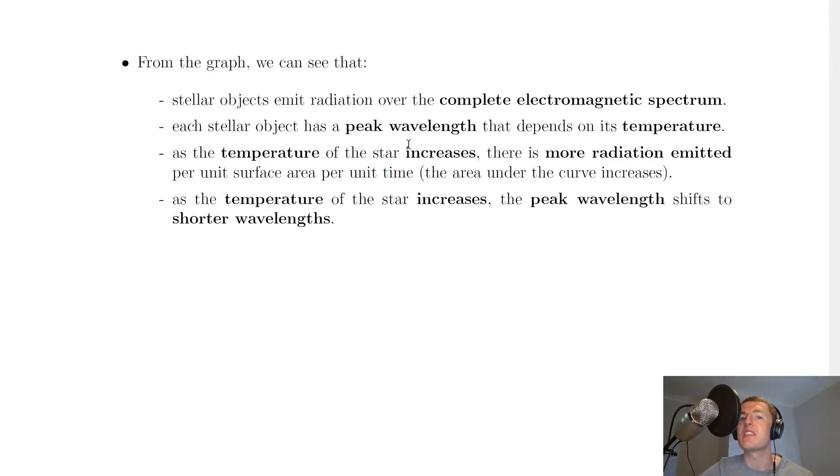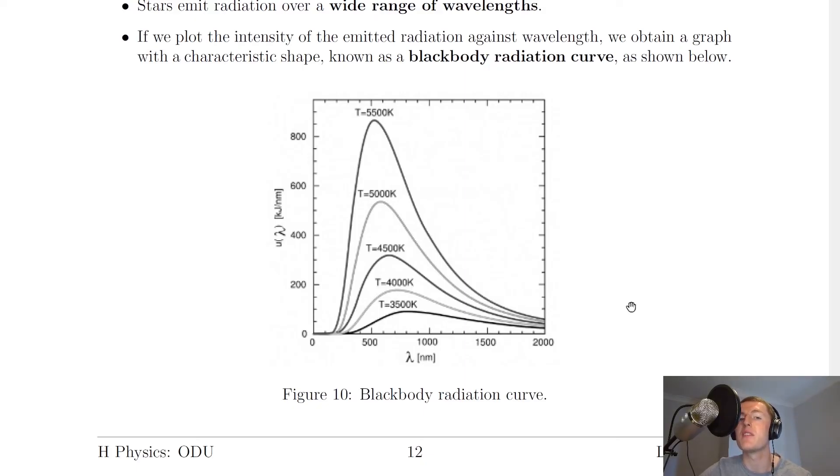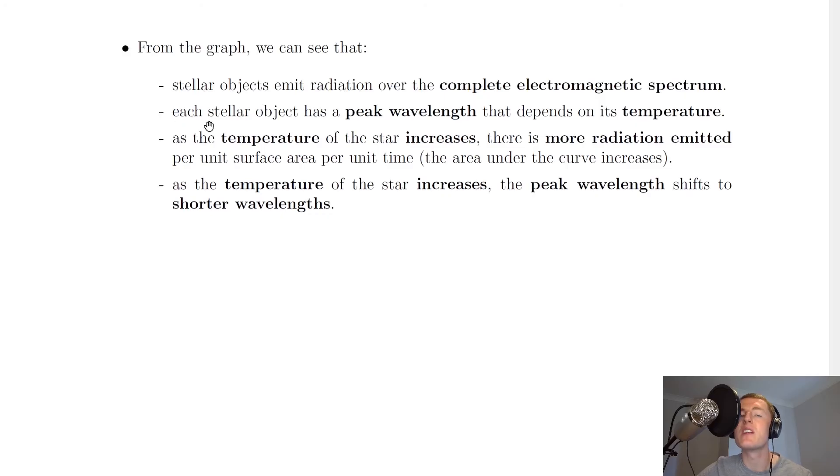It also says that each stellar object has a peak wavelength that depends on its temperature. So if we look here for our different stellar objects, the different curves, we'll get different values of peak wavelengths for different temperatures.